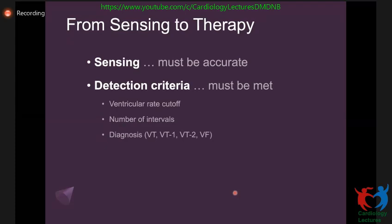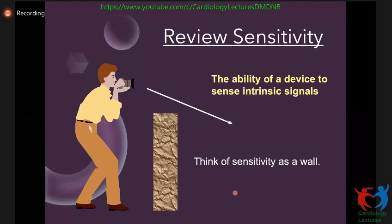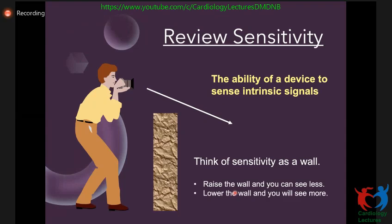For the ICD, it has to have very accurate sensing, good detection criteria to diagnose VT or VF, and good discrimination between VT and SVT to give therapies appropriately. When talking about sensitivity, it's the ability of the device to sense intrinsic signals — like being on one side of a wall. If you raise the wall too high, you see less; if you lower it, you see more.